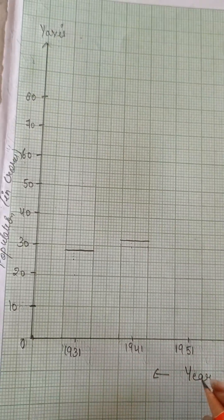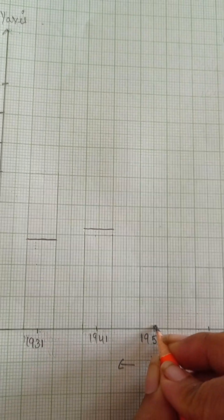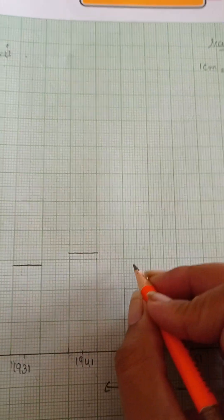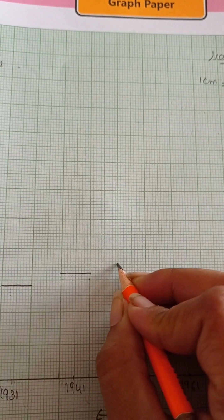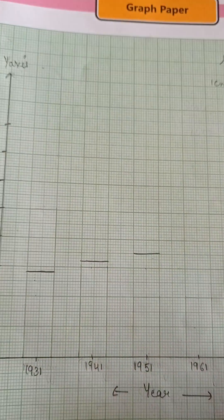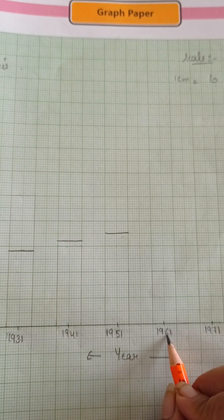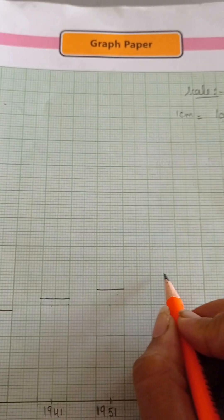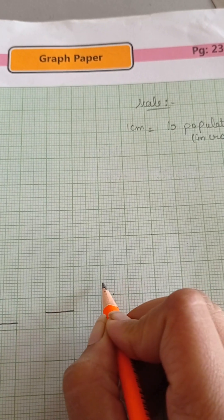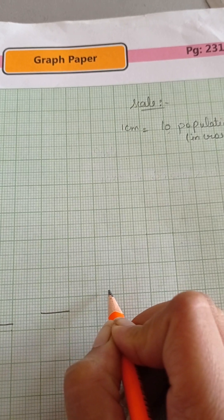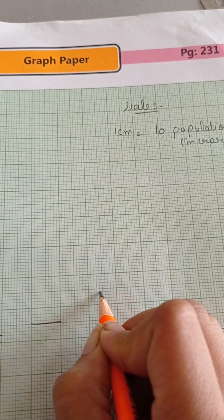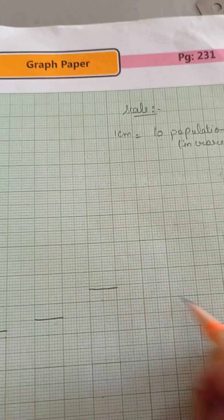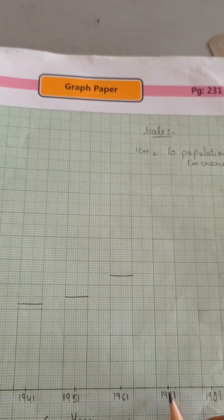Next one is 35 in 1951. Here it is 30, and here it is 35. In 1961, it is 44 crores. Here it is 40 and 41, 42, 43 and 44.